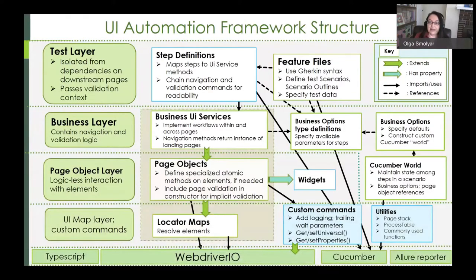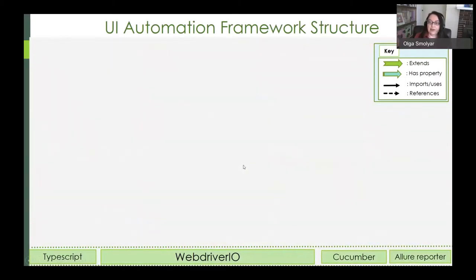This is a schematic of the structure of our UI automation architecture. Because this slide is a bit busy, we'll go through it layer by layer. At the bottom is the open source layer, including WebDriver.io, of course, and a number of services, including TypeScript, Cucumber, and the Allure Reporter, which another breakout session in this conference will be addressing also.